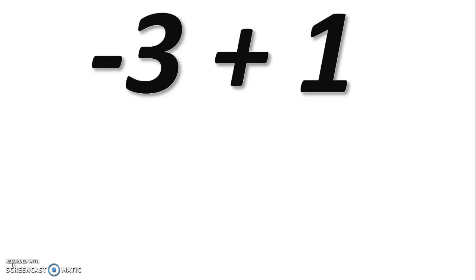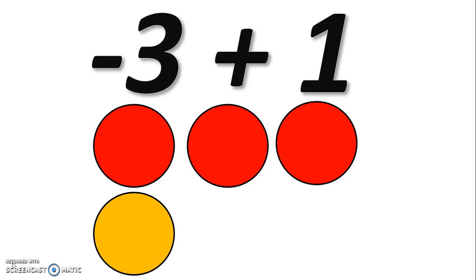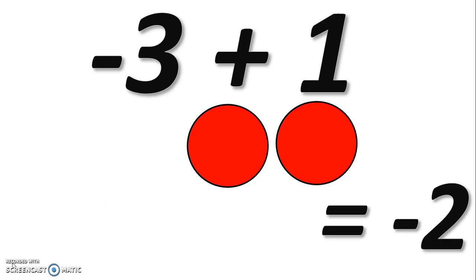We're going to do one last one together: negative three plus one. Build it with the counter chips. You should have three reds and one yellow. The one red and one yellow cancel out and are removed, leaving two red chips — which is negative two.